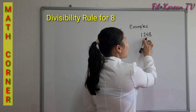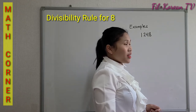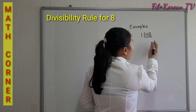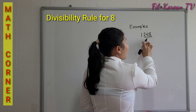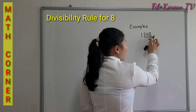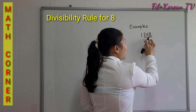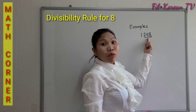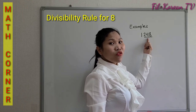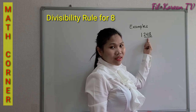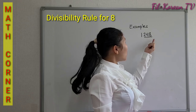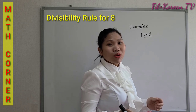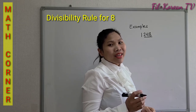First example: 1,248. The last three digits form a number 248. 248 is a multiple of 8 or can be divided by 8. So, 1,248 is divisible by 8.